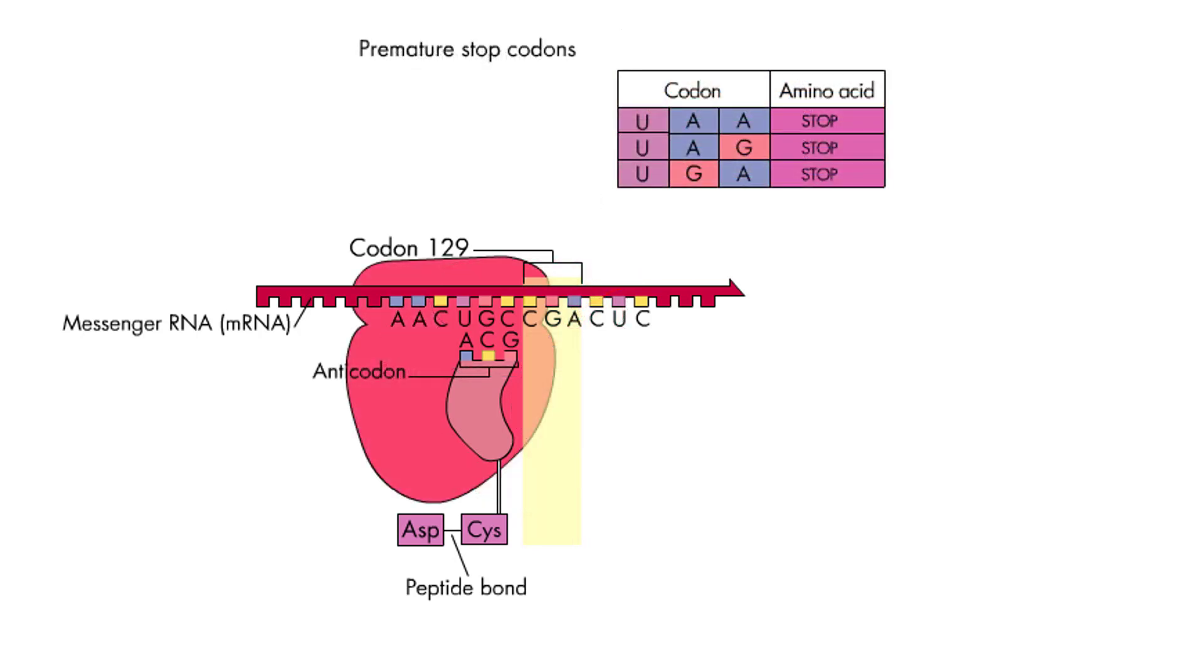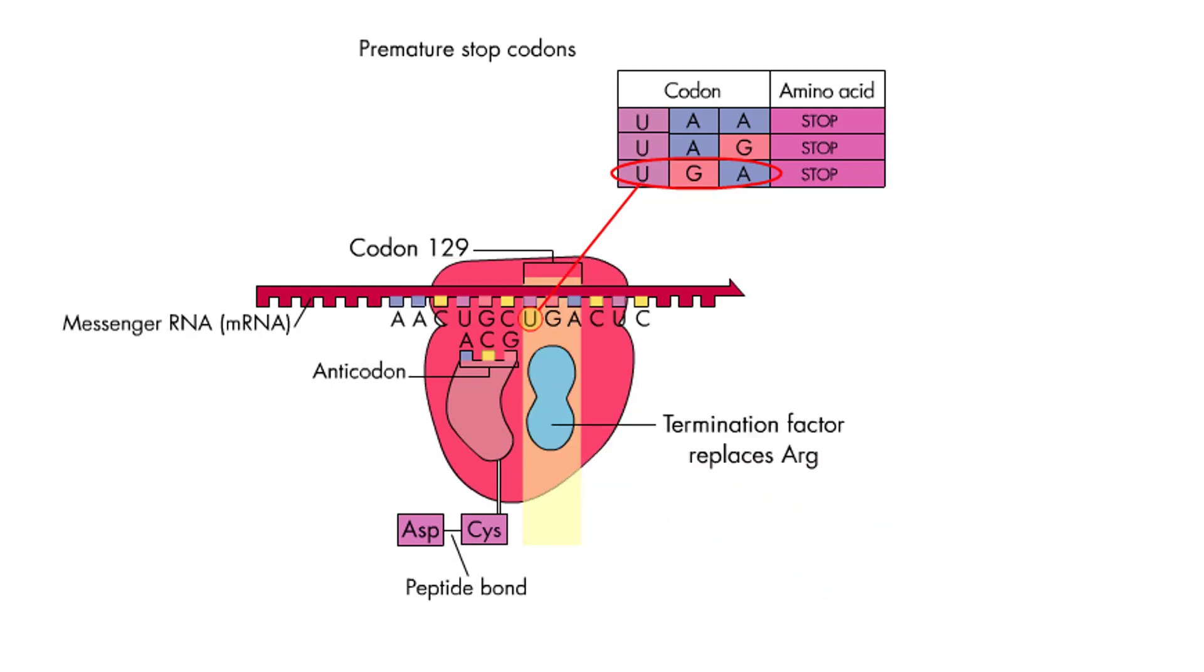Some substitutions convert a codon into a stop codon, either UAA, UAG, or as in this case, UGA. Here, a C in the 129th codon of the AT3 gene was mutated to a U. The change leads to a UGA in the message, and this in turn leads to the synthesis of an abnormally short and non-functional AT3 protein. The protein synthesized is too short to do its job of preventing blood clots. This can lead to blood clots and, in some cases, even death.